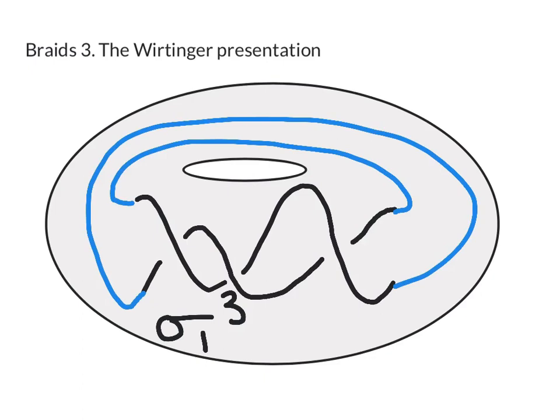So the knot sits inside a solid torus and the first thing I'm going to do is tell you how to find the fundamental group of that solid torus minus the knot. Okay so let's call the torus T, let's call the knot K. We want to find the fundamental group of T minus K and from this we're going to go on to work out the fundamental group of R³ minus K.